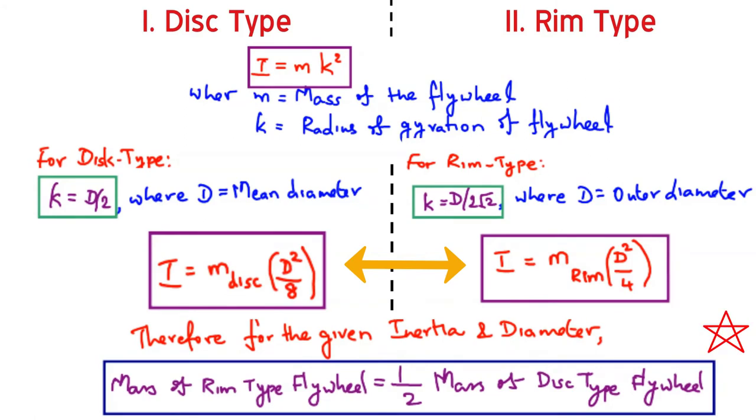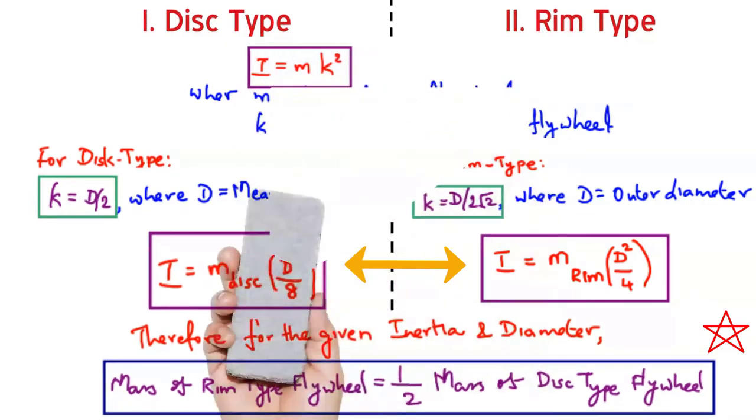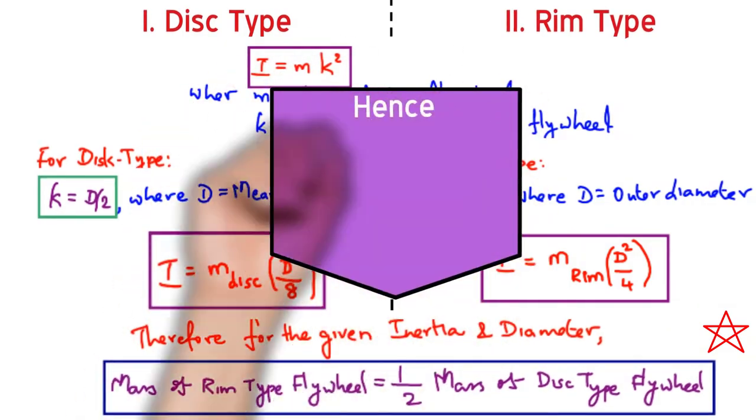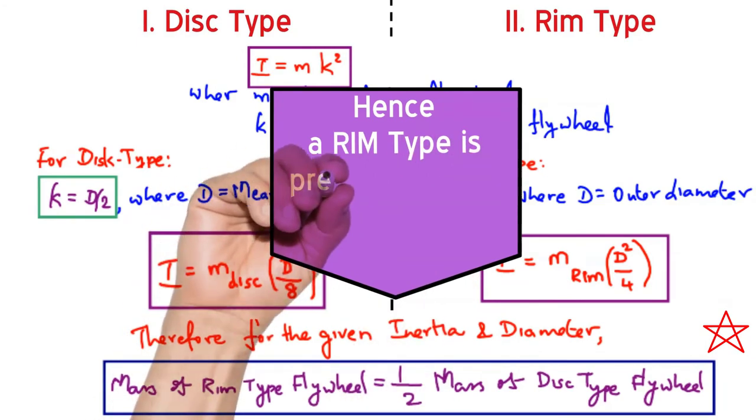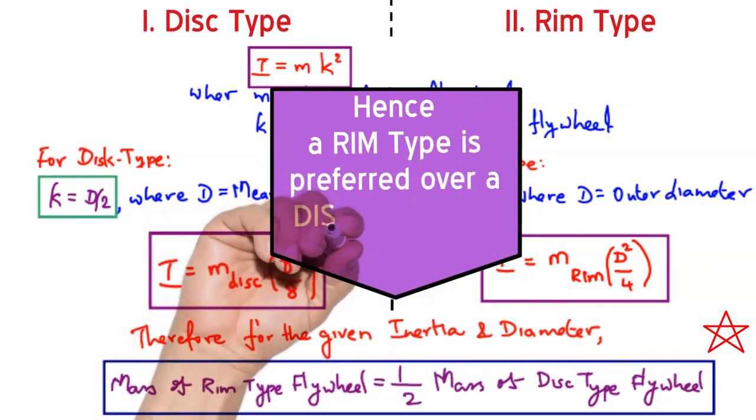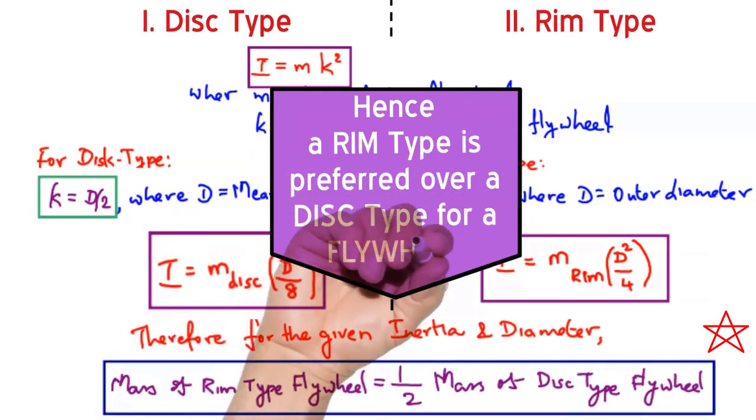The same logic can be put it in the other way around. For the same mass and diameter, rim type will produce twice the mass moment of inertia than that of the disc type. And hence, obviously, a rim type is the most preferred choice over the disc type for a flywheel.